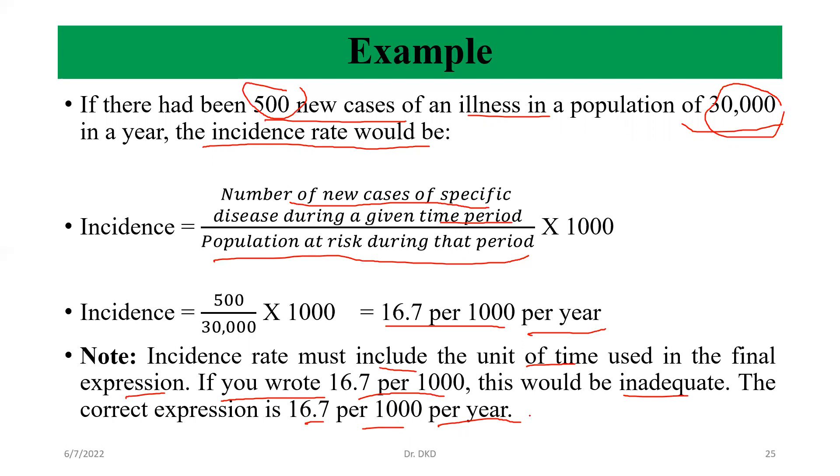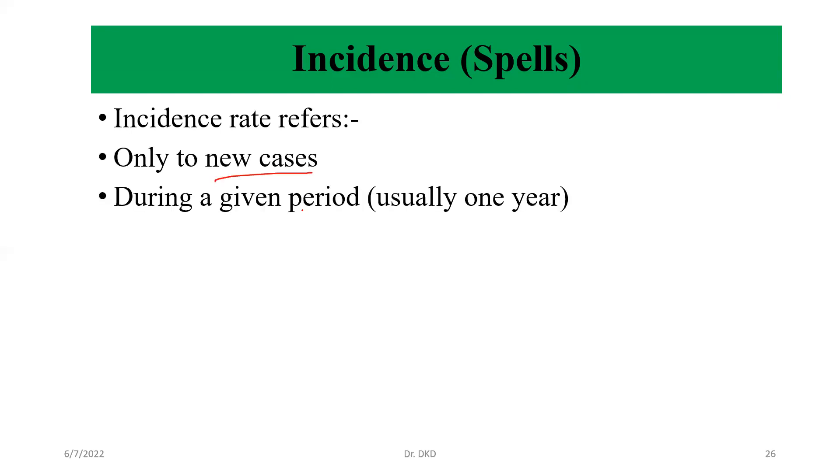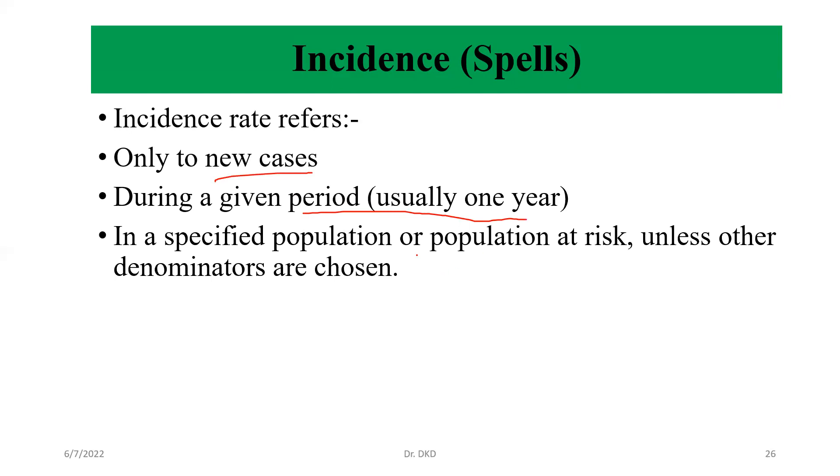Now we will discuss incidence spells - meaning within a year if the same patient has identified two episodes of the disease, then how we will calculate incidence. It refers only to new cases during a given period, usually one year, in a specified population or population at risk unless other denominators are chosen.